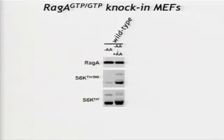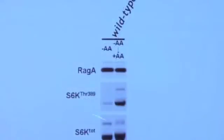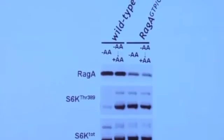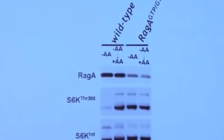We were concerned about overexpression artifacts, so we generated knock-in MEFs and knock-in animals where both alleles of the RAG A locus encode this constitutively GTP-bound form. In control MEFs there's nice regulation of the pathway looking at canonical outputs, but in the RAG A GTP/GTP knock-in cells there's no regulation. Unfortunately these animals die perinatally and share similarities with animals defective for autophagy — our leading hypothesis is that they starve to death before suckling because they cannot induce autophagy, though that remains to be proven.